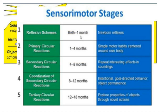Within the sensorimotor stage, the first thing that happens is reflexive schemas — newborn reflexes. Then come primary circular reactions, which are simple motor habits centered on the body. Next are secondary circular reactions, where the child repeats interesting effects in the surroundings. Then intentional goal-oriented behavior emerges, such as object permanence. Finally, the child gets into exploring properties of objects — picking something up, looking at it, and manipulating it.